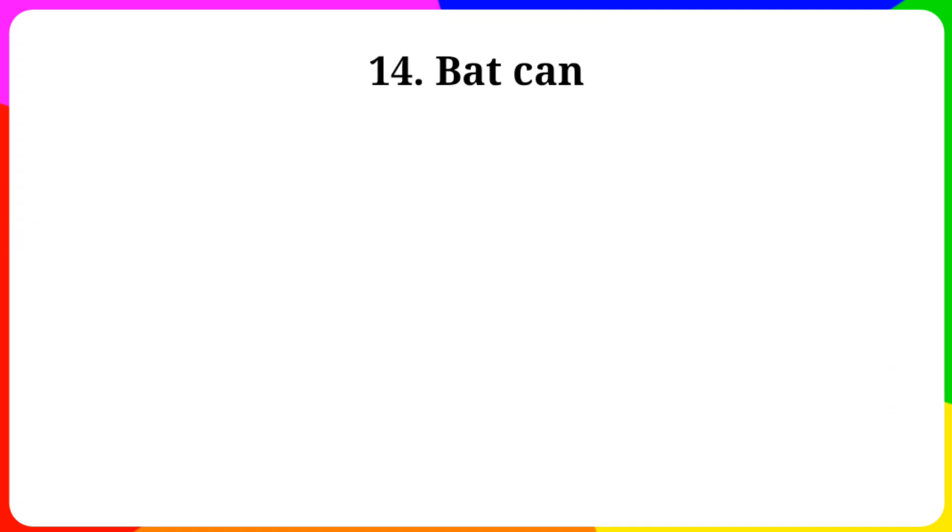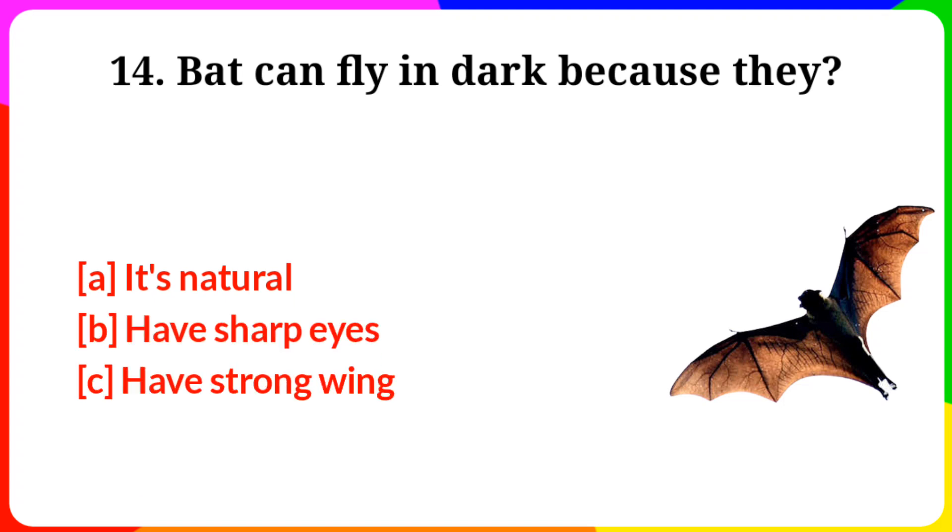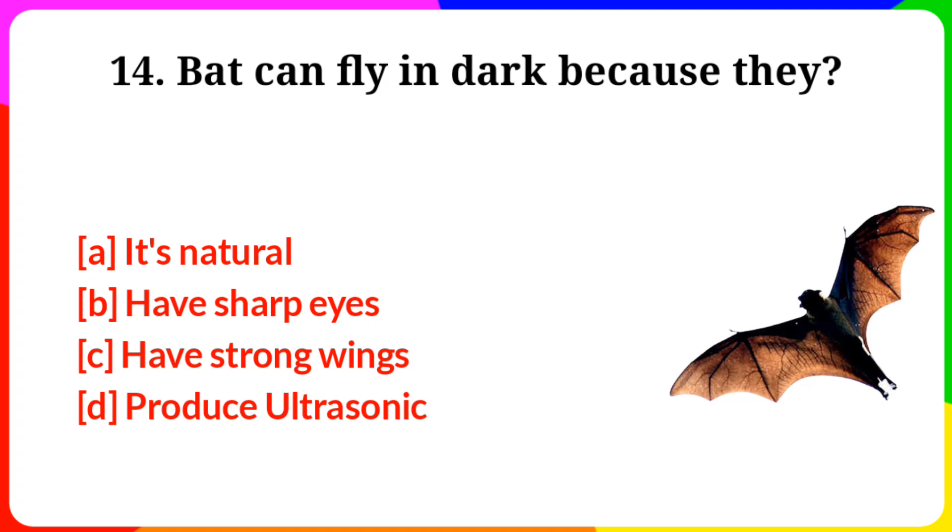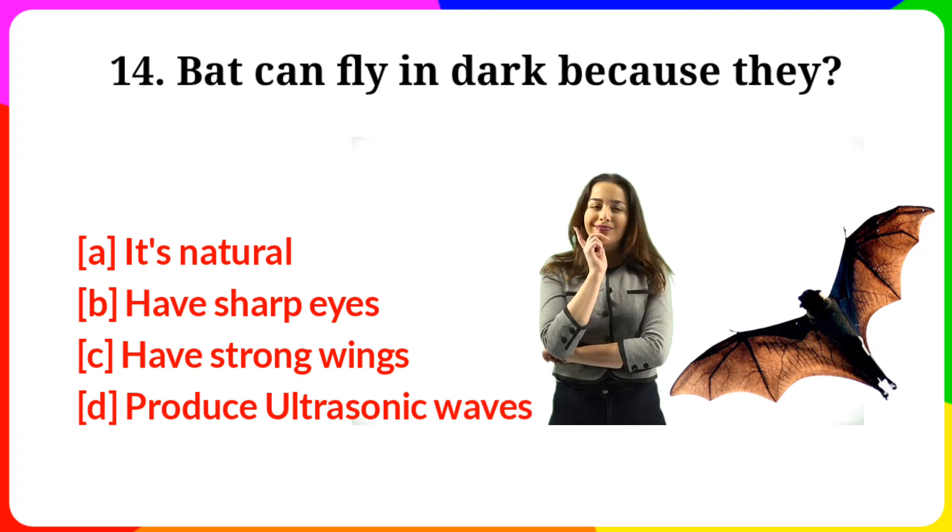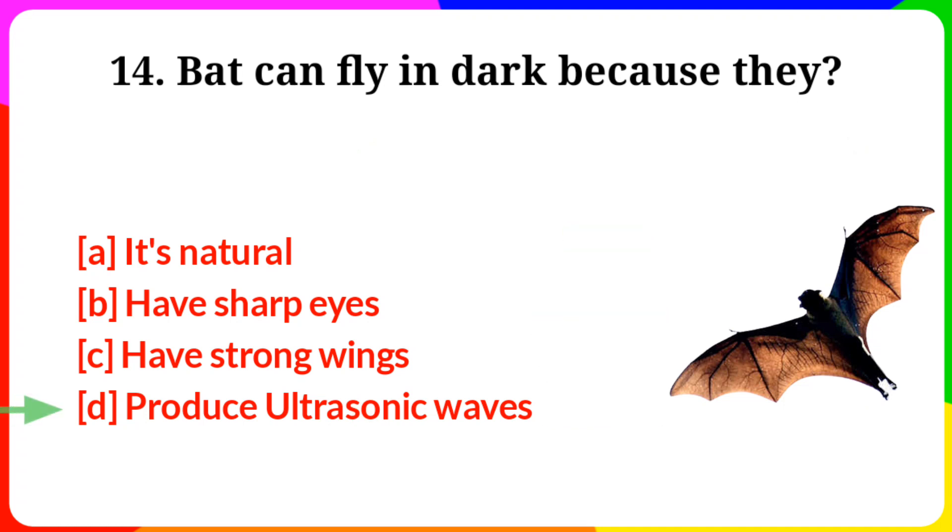Question number 14. Bat can fly in dark because they? Option A: It's natural. B: Have sharp eyes. C: Have strong wings. D: Produce ultrasonic waves. Answer is option D, Produce ultrasonic waves.